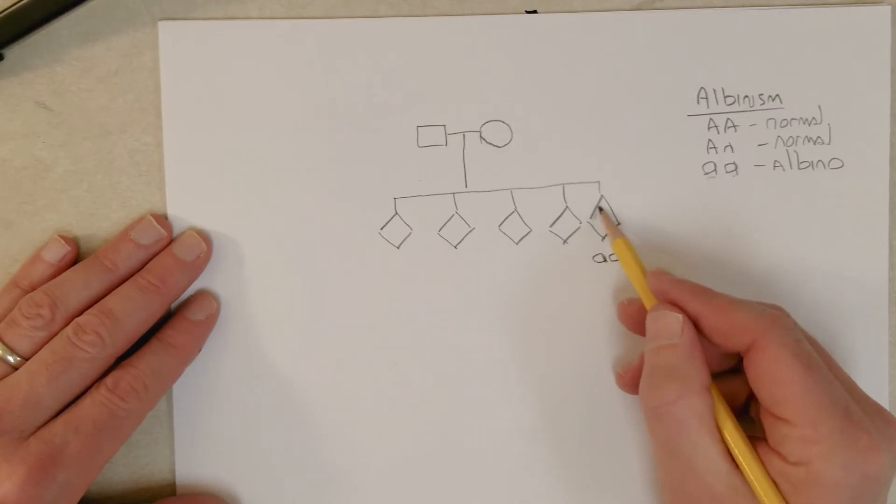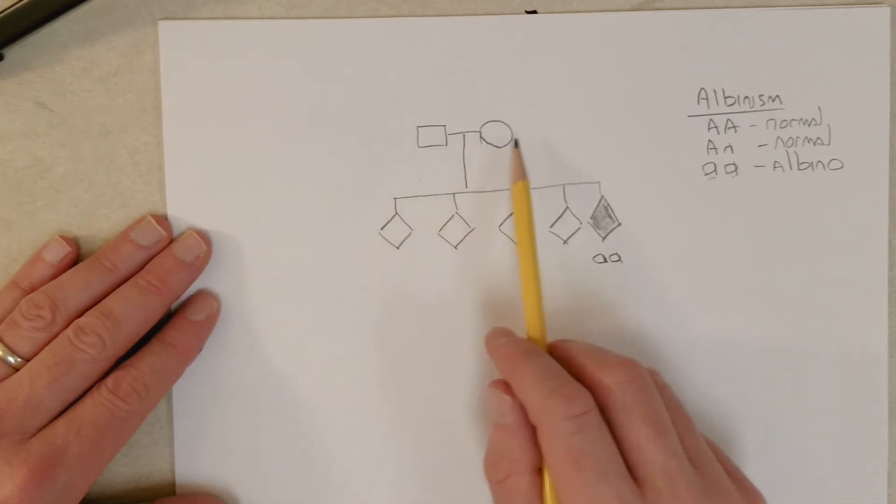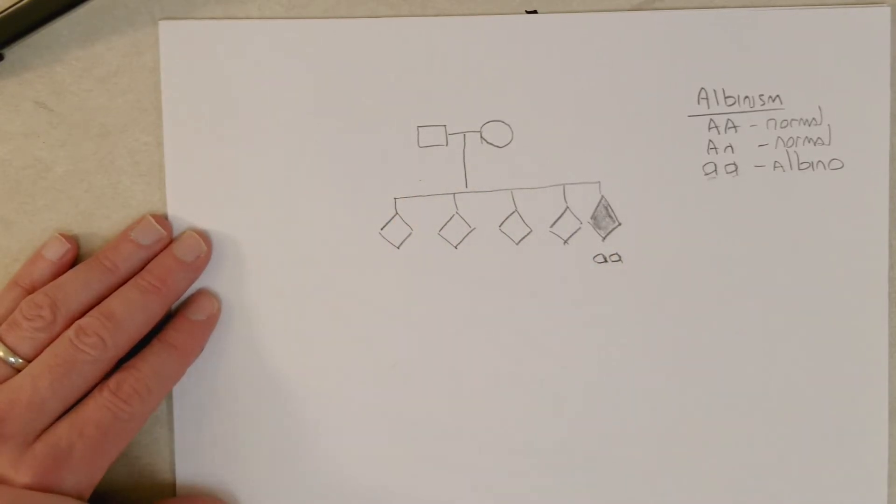So we know that this child right here - it's also standard - if you're studying a particular trait with a pedigree, individuals that have the trait are shaded in. So this individual is albino, no one else is. Okay, so can we figure out the genotypes of every other individual in this tree?